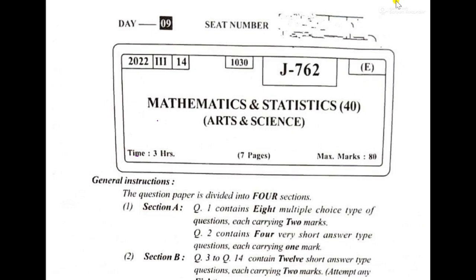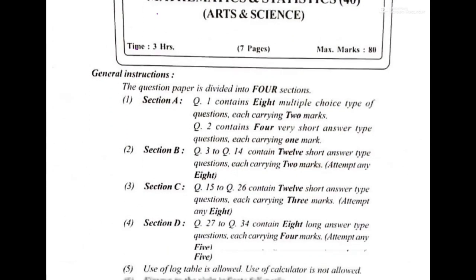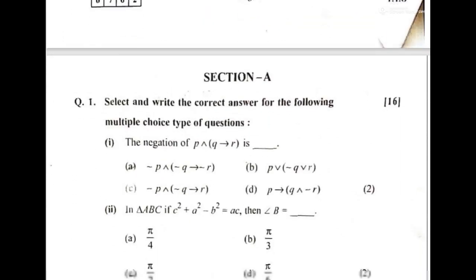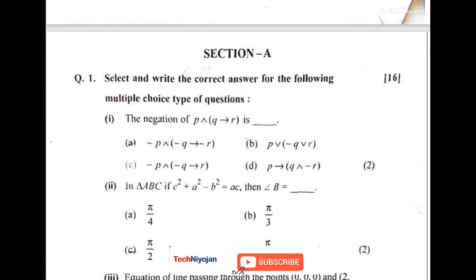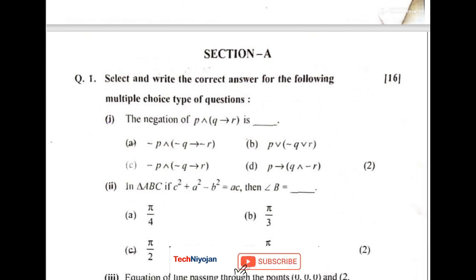Hello, welcome students to Techniojar. Myself Ajit Kumar. Today we'll see the paper solution for Mathematics subject, right, of Class 12 HSC Maharashtra Board. See, first we'll see the objective answers of Section A. The first question's answer is the option D.